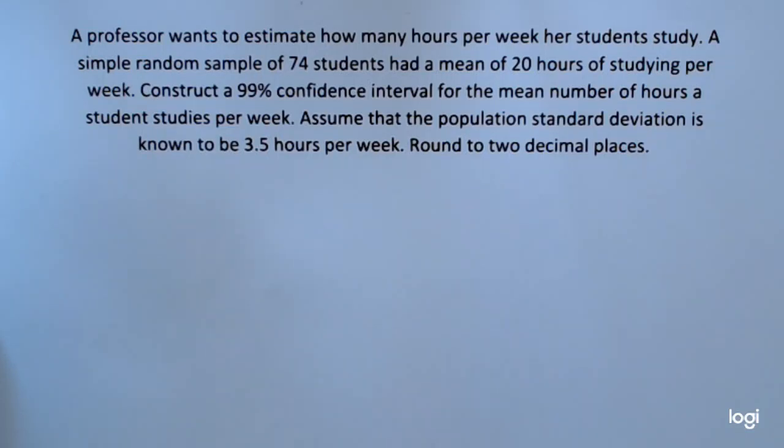This video is an example of finding a confidence interval for a population mean when sigma is known. A professor wants to estimate how many hours per week her students study. A simple random sample of 74 students had a mean of 20 hours of studying per week. Construct a 99% confidence interval for the mean number of hours students study per week. Assume that the population standard deviation is known to be 3.5 hours per week.